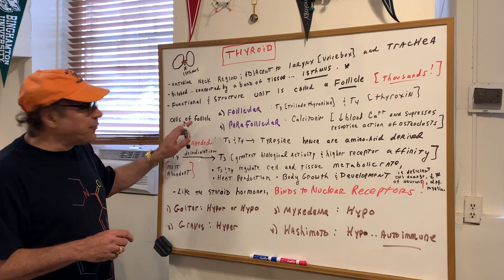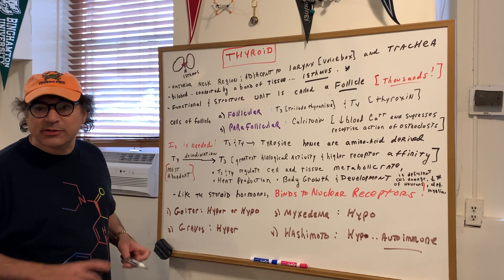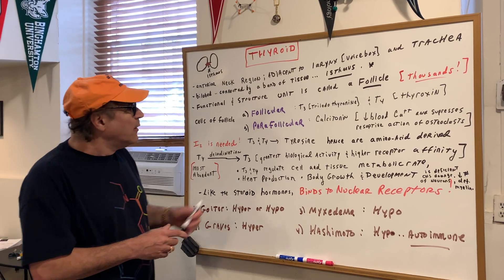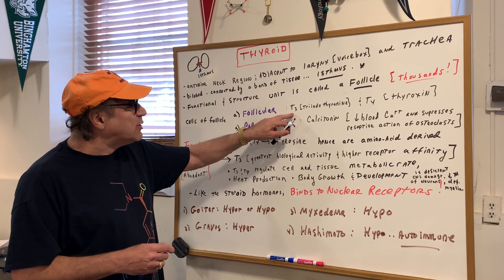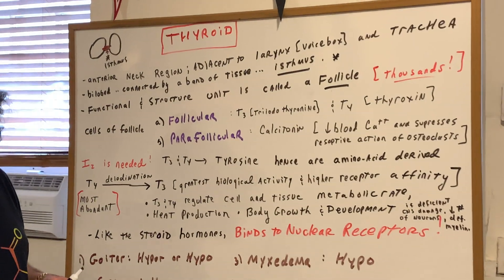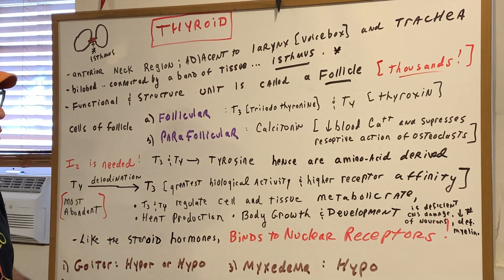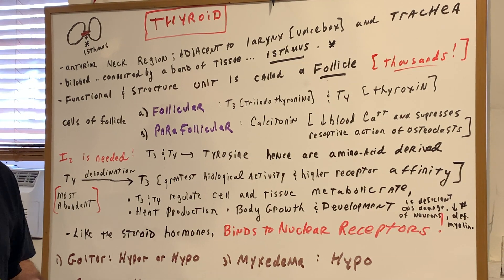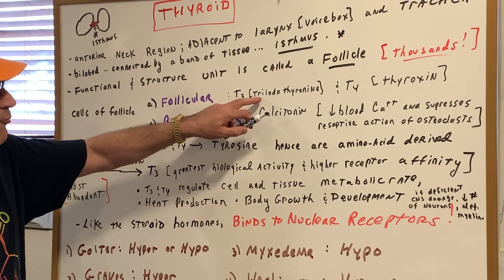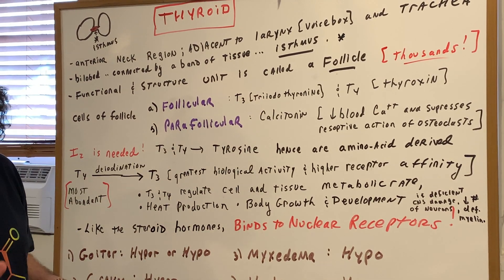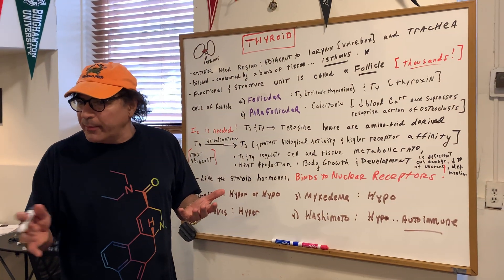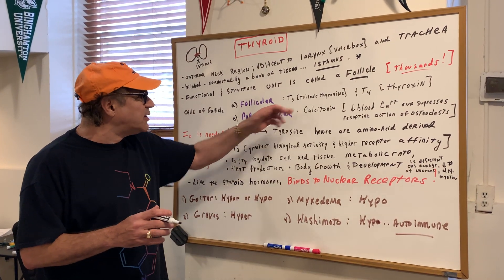The cells of the thyroid gland include the follicular cells and the parafollicular cells. The follicular cells are involved in making T3 — triiodothyronine — and T4, which you probably know as thyroxine. These two hormones are derived from iodine, which is an unusual element.